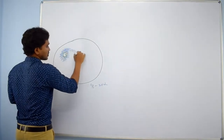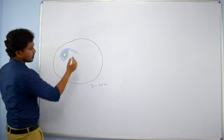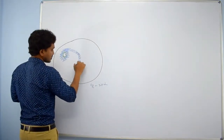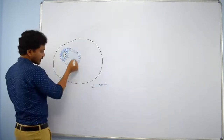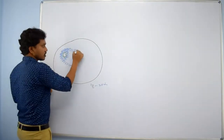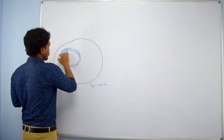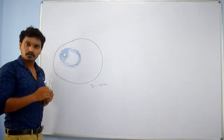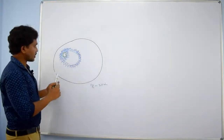Note: if the cycle is more than 28 days, ovulation does not occur exactly at the 14th day — it occurs 14 days before the next menstrual cycle.